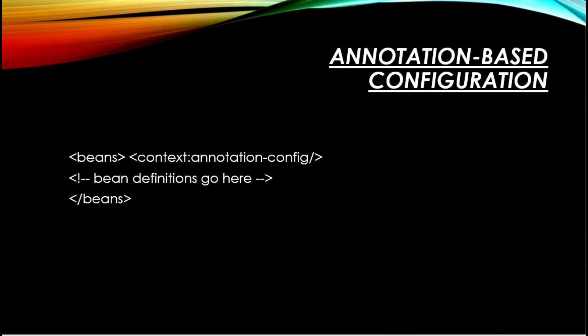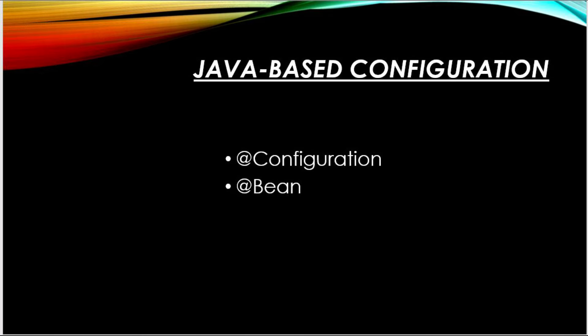Annotation-based configuration: instead of the XML approach, the beans can be configured into the component class itself by using annotations on the relevant class, method, or field declaration. Annotation wiring is not active in the Spring container by default; it has to be enabled in the Spring XML configuration by using context annotation config. Java-based configuration: Spring framework introduced key features as part of new Java configuration support. This makes use of @Configuration annotated classes and @Bean annotated methods. The @Bean annotation has the same role as the bean element. Classes annotated with @Configuration allow defining inter-bean dependencies by simply calling other @Bean methods in the same class.